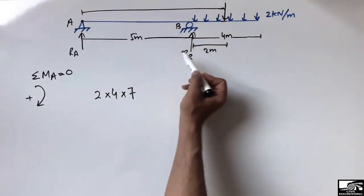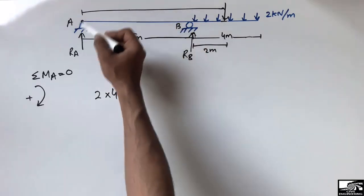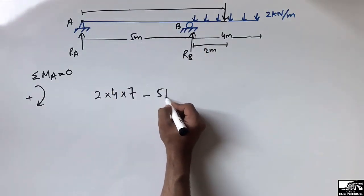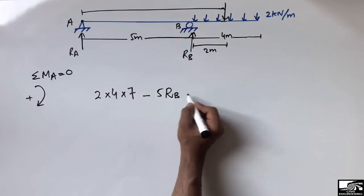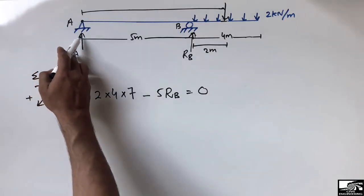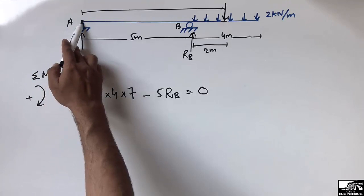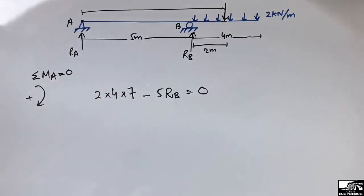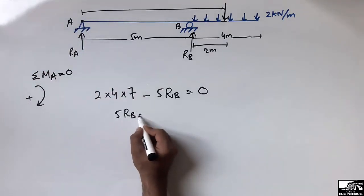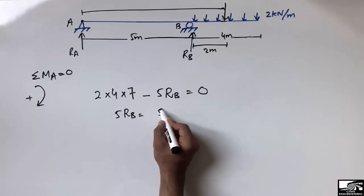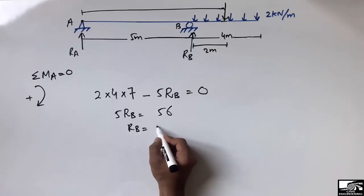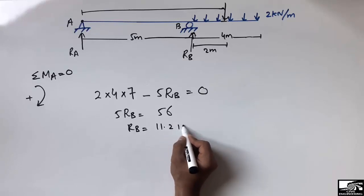RB acts in the anticlockwise direction, so it is taken as negative. The equation becomes: 56 − 5·RB = 0. Solving, RB = 56/5 = 11.2 kilonewton.